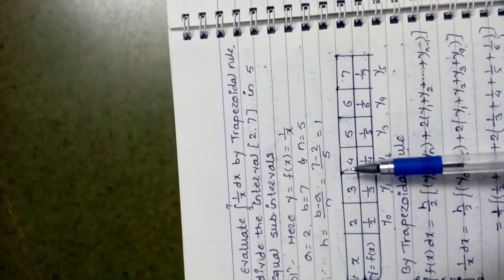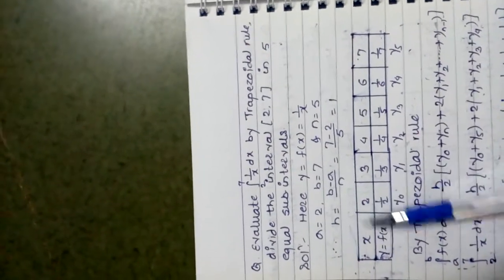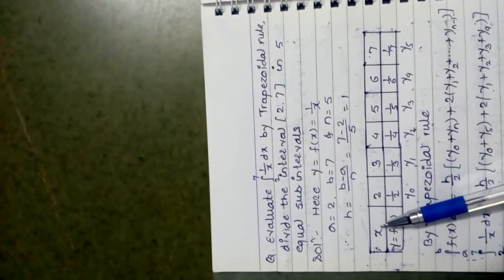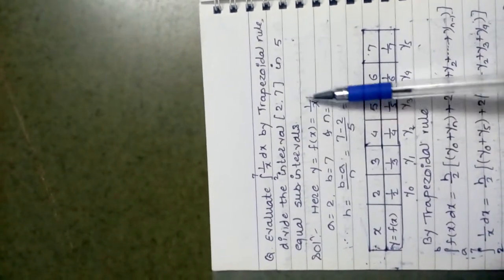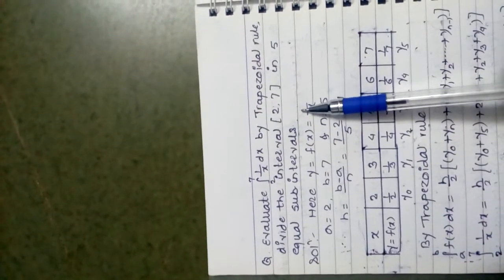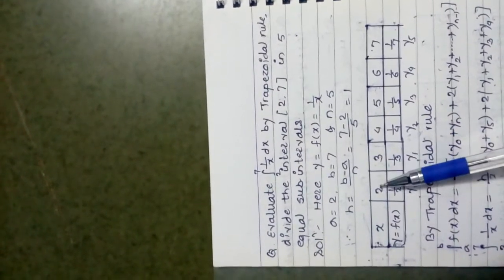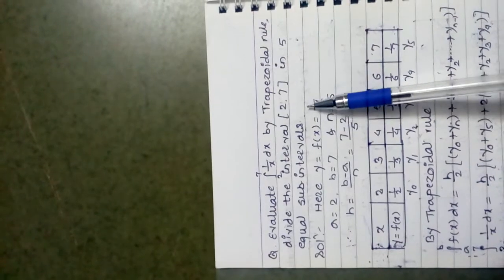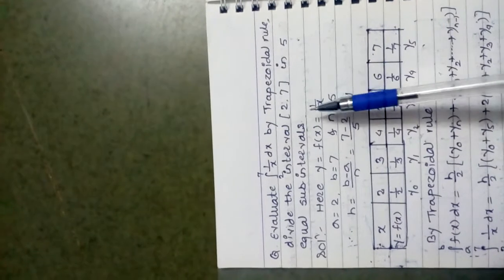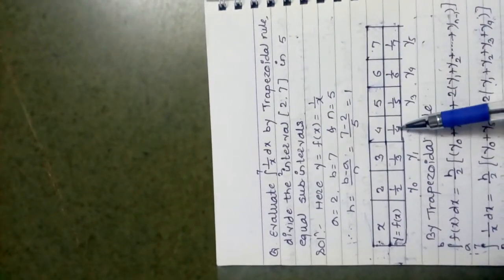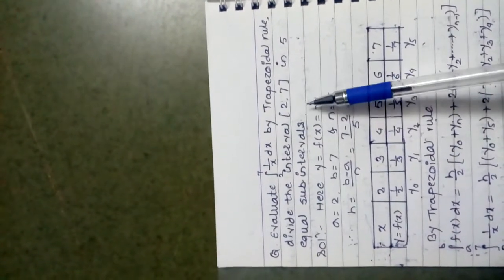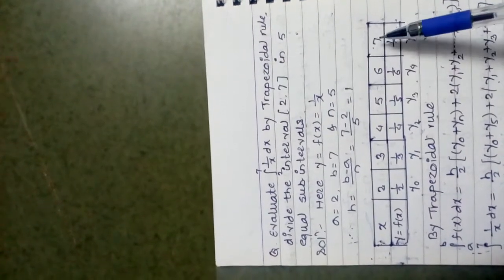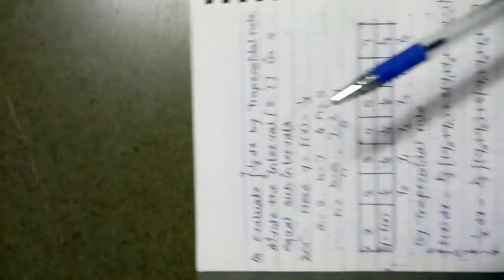The first value of x is 2 and the last value is 7. Substituting x values into y = 1/x: at x = 2, y = 1/2; at x = 3, y = 1/3; at x = 4, y = 1/4; at x = 5, y = 1/5; at x = 6, y = 1/6; at x = 7, y = 1/7. These are labeled y0 = 1/2, y1 = 1/3, y2 = 1/4, y3 = 1/5, y4 = 1/6, and y5 = 1/7.